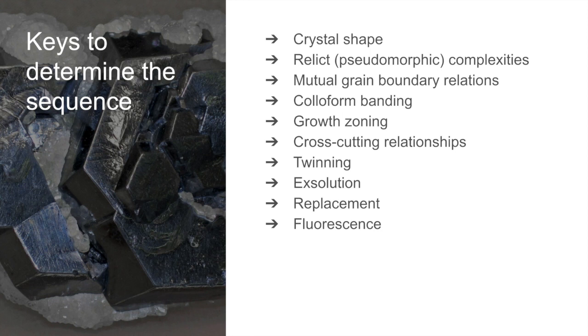Growth twins may develop in some grains and not in others and are capable of differentiating mineral generations. For example, inversion twinning is more difficult to recognize but, if seen, indicates a sequence of falling temperature and at least partial re-equilibration.